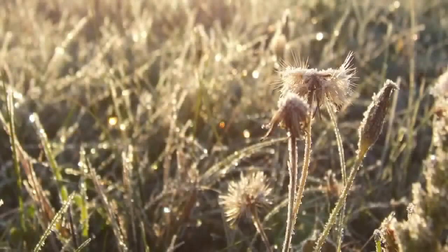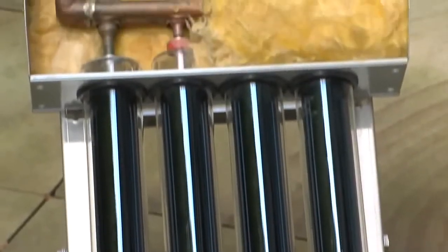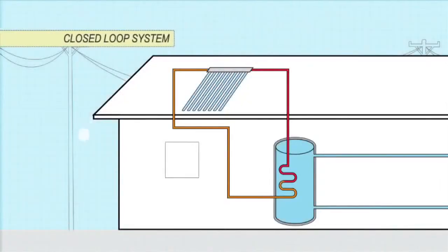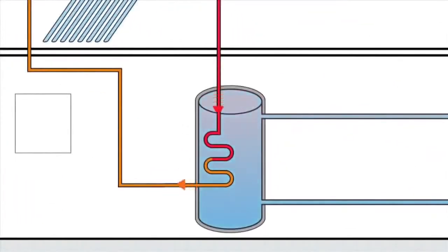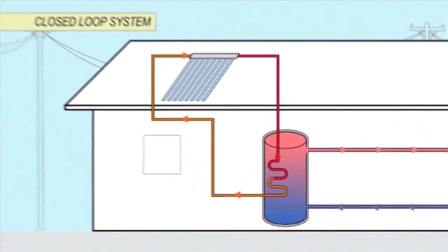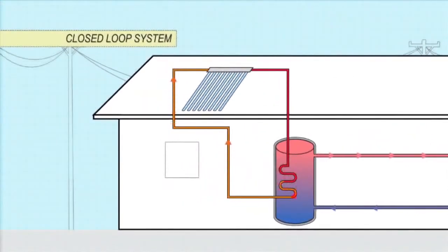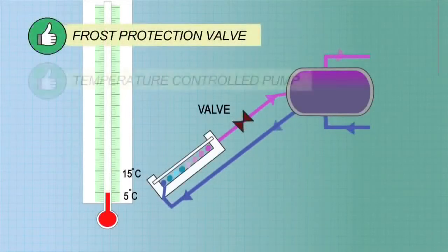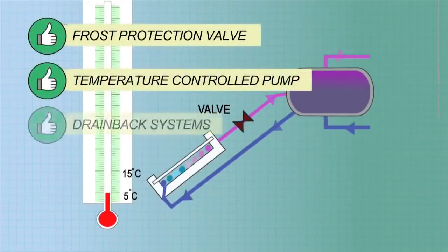In places with minor frosts, evacuated tubes may offer enough in-built protection. In climates with regular frosts, indirect or closed-loop systems are the most popular and reliable form of frost protection. Instead of water, an antifreeze fluid is heated in the collectors. The antifreeze passes heat onto the water via a heat exchanger. The antifreeze does not come into contact with the household water supply. Other frost protection methods are available, such as frost protection valves, temperature programmable pumps, and drain back systems.